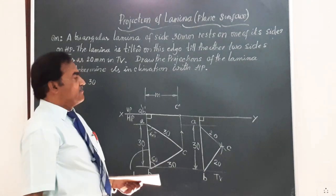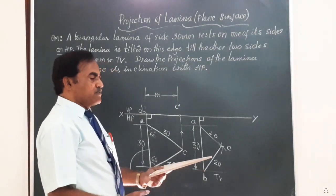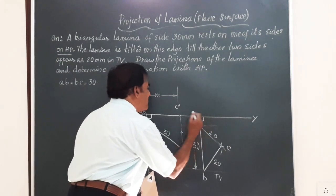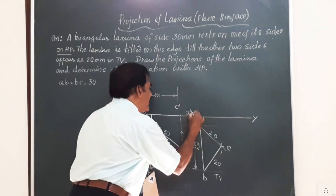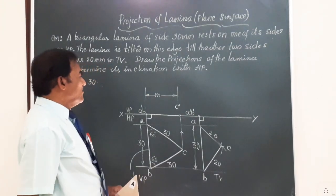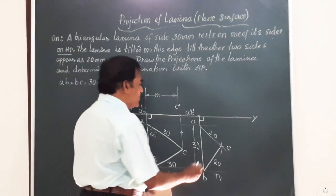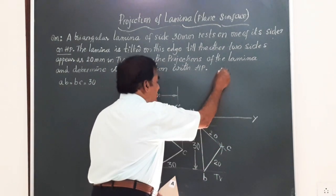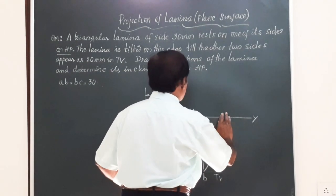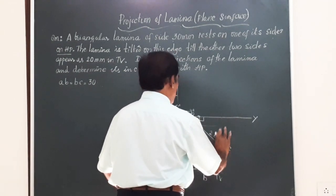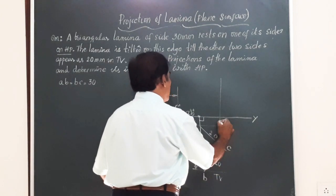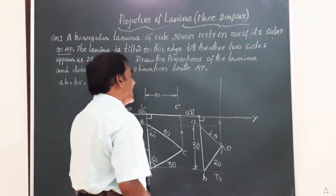How to get it? Friends, you know very well, whenever the lamina is on HP on one of the edges, this AB will remain here itself. So, I am going to mark A' B' a point on XY by projecting this. Friends, now you draw a vertical line through the point C. A vertical line, straight line from the corner C of the top view.